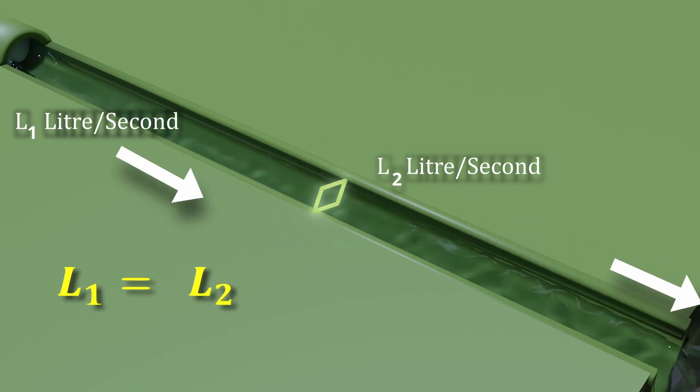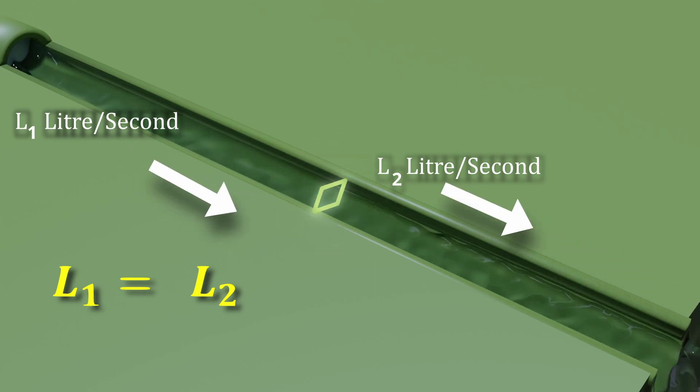We can say that L1 equals L2. Algebraically, L1 equals L2 can be written as L1 minus L2 is equal to zero.